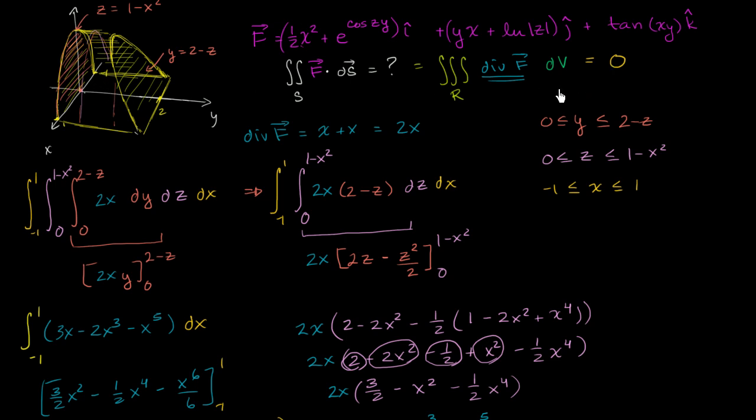And what I want to do in this video is think a little bit about whenever you get an answer like 0. You want to think about why is it? This is saying that there's no net flux across this surface. Or if you sum up all of the divergences in this volume, you are getting 0.